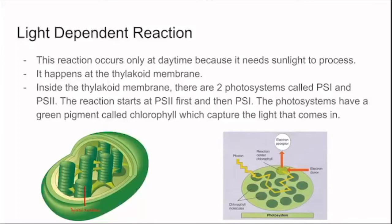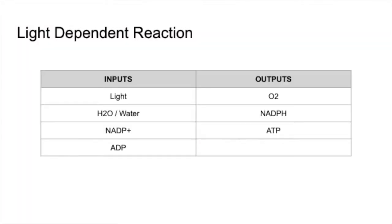Because it has chlorophyll, that's why the dependent reaction occurs here. The inputs of this reaction are light, water, ADP, and NADP+. And the outputs are oxygen, NADPH, and ATP.